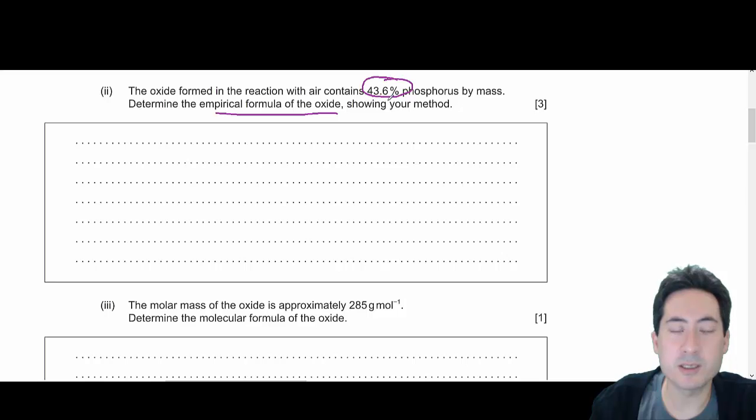So you're given 43%, so with all these empirical formulas, the trick is to assume you've got 100 grams.